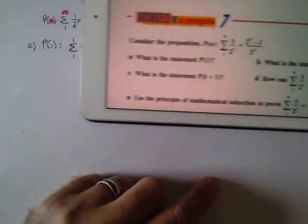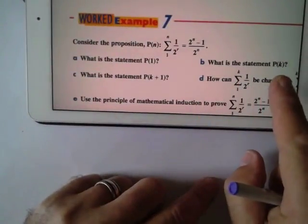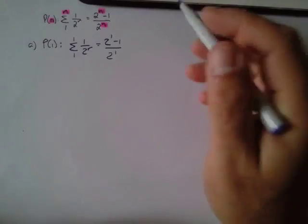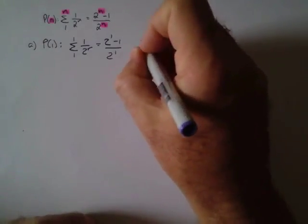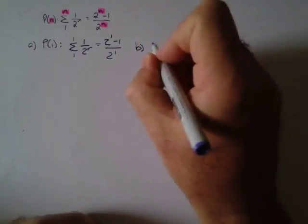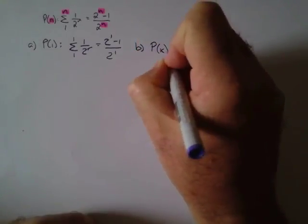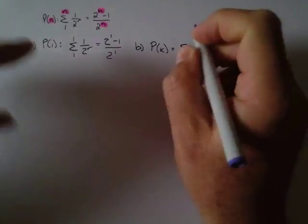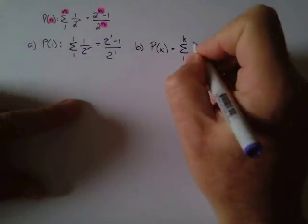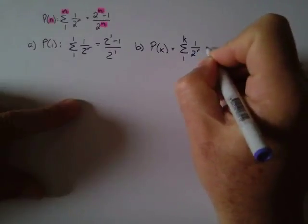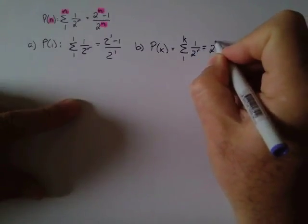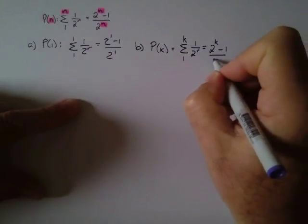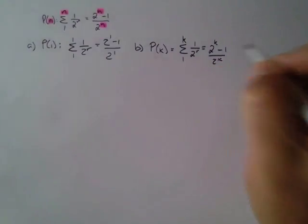Part B says: what is the statement when N equals K? I'm going to go back and in the place of N, I'm going to put a K. That's going to give us, from R=1 to K, the sum of 1 over 2^R equals (2^K minus 1) over 2^K. So in the place of N, I've just put K's now.